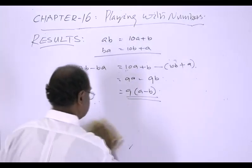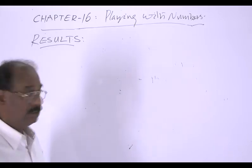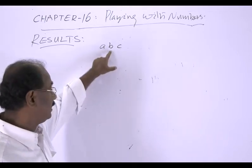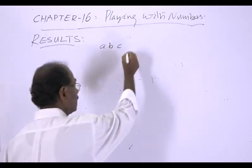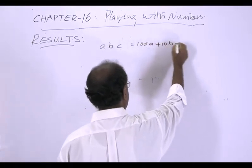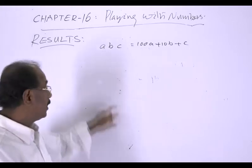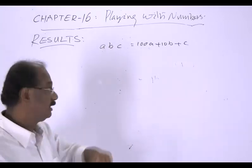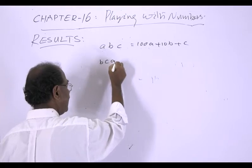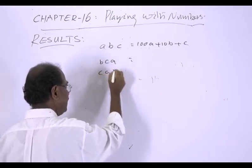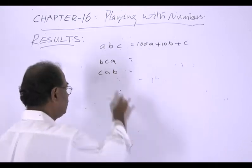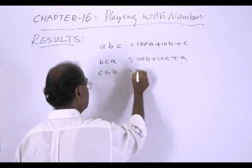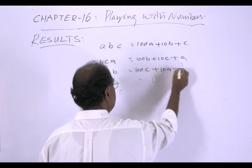Now consider a three-digit number ABC, which equals 100A plus 10B plus C. Suppose we change these three digits cyclically. Then from ABC we get BCA, and then CAB. BCA equals 100B plus 10C plus A, and CAB equals 100C plus 10A plus B.